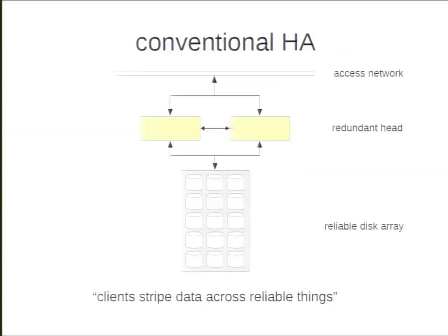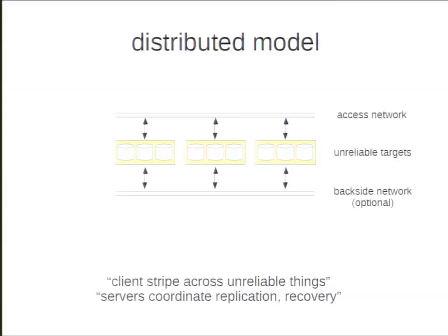Ceph does a number of things differently. Looking at how people typically set up Lustre systems versus how Ceph systems are built: in a conventional HA environment, you have some access network, redundant head nodes and OSSs talking to a back-end disk array designed to be highly reliable — you're striping across reliable things. Ceph is entirely different. The assumption is that any component in the system can fail, and we don't want to deal with the difficulties of configuring failover pairs. We're striping over unreliable things, but those things are intelligent — handling consistency, coordination, and replication of data across storage nodes.